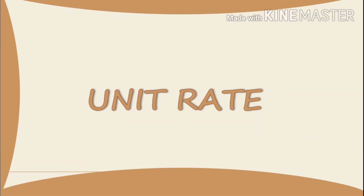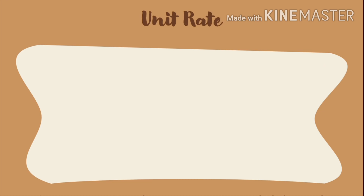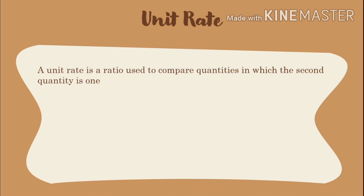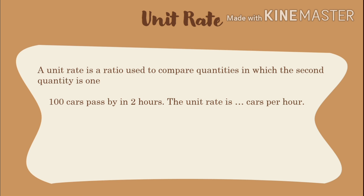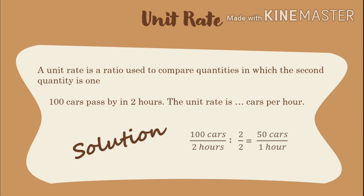Unit Rate. A unit rate is a ratio used to compare quantities in which the second quantity is 1. For example, 100 cars pass by in 2 hours. The unit rate is 50 cars per hour. Solution: 100 cars divided by 2 hours equals 50 cars divided by 1 hour. So, the unit rate is 50 cars per hour.